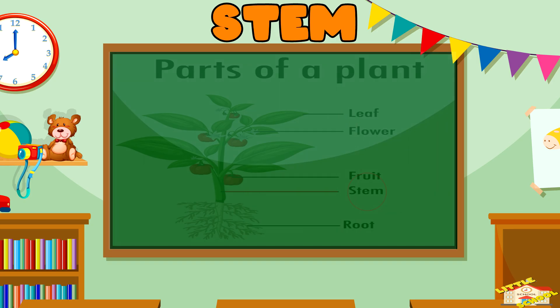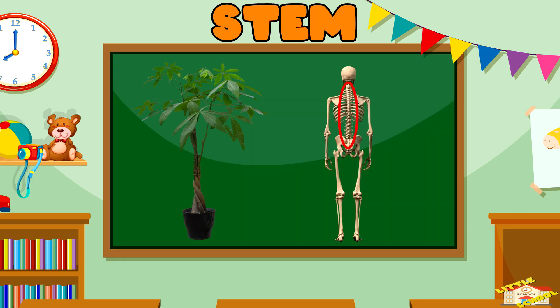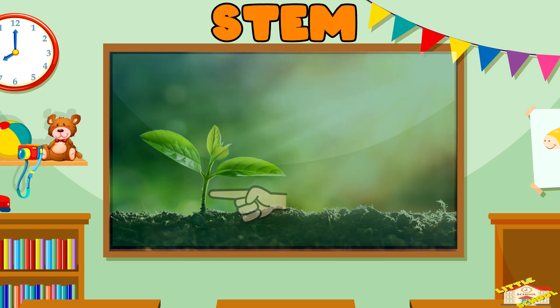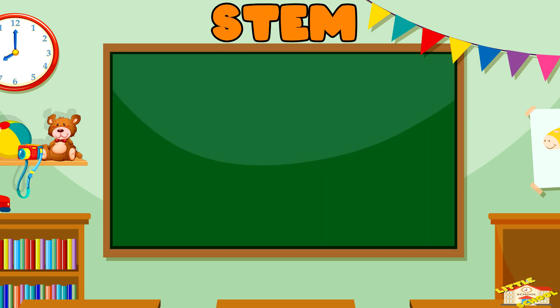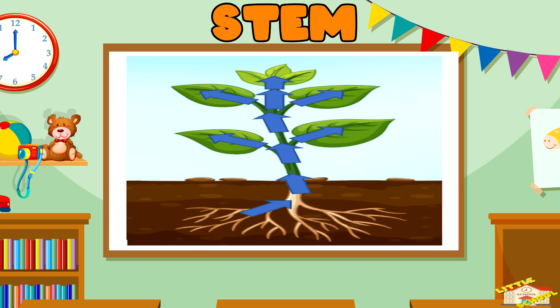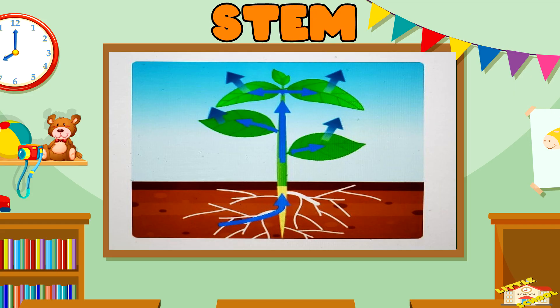The stem is like the plant's spine. It stands tall and helps the plant reach up to the sunlight. It also acts like a highway, moving water and nutrients from the roots to the leaves and other parts of the plant.